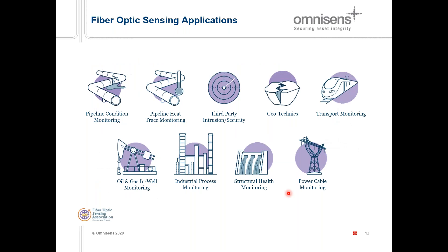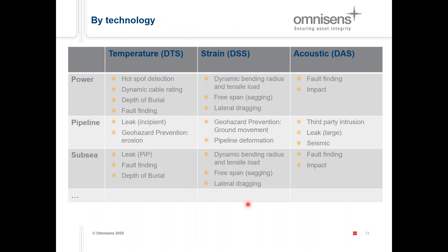Looking at the application landscape — a slide borrowed from the FOSA Technology Committee — the field is extremely wide, from pipeline monitoring through transport, oil and gas in-wall monitoring, geotechnology, large structures, to power cable monitoring, just to name a few. There are really a large number of things we can do provided there is a fiber somewhere in the vicinity. I revisited this based on Omnisense's technology priorities: temperature, strain, and acoustic in the power market, pipeline, and subsea.